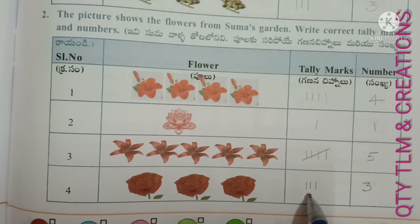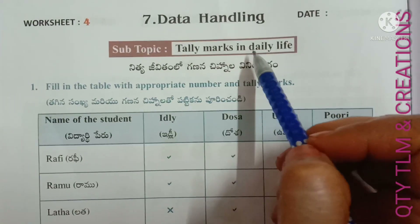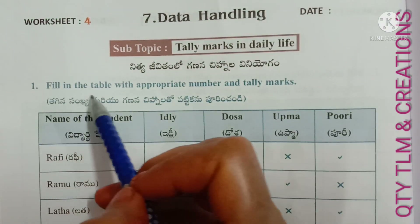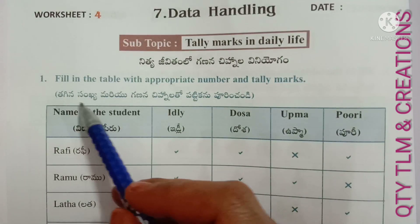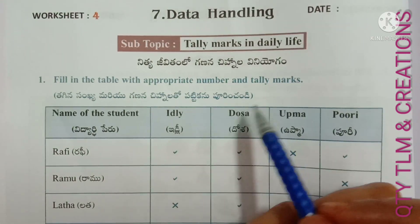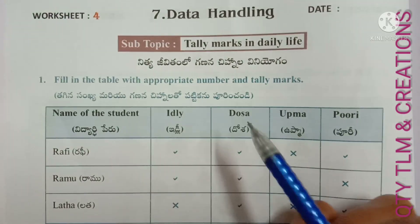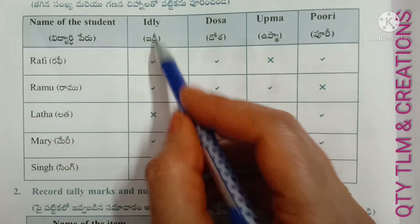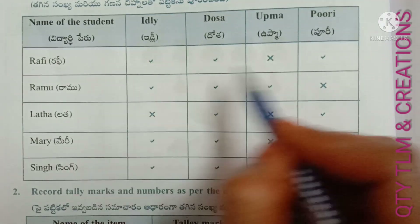Next, Worksheet Number 4. Subtopic: Tally Marks in Daily Life. First question — fill in the table with the appropriate number and tally marks. Name of the student, idli, dosa, upma, puri. So here Raffi likes idli, dosa, and puri — he doesn't like upma.